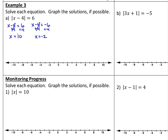So the solution set is {negative 2, 10}. We plot those on the number line — positive 10 and negative 2. To check: plugging in negative 2 gives negative 2 minus 4 equals negative 6 inside, and the absolute value of negative 6 is positive 6 — correct. Plugging in 10 gives 10 minus 4 equals 6, and the absolute value of 6 is 6 — also correct.